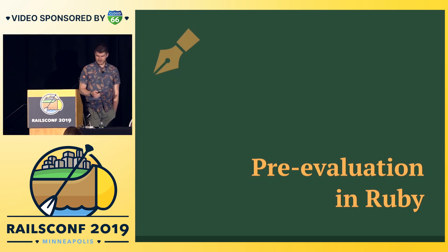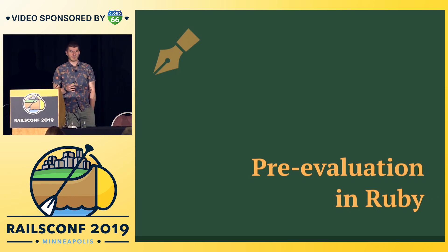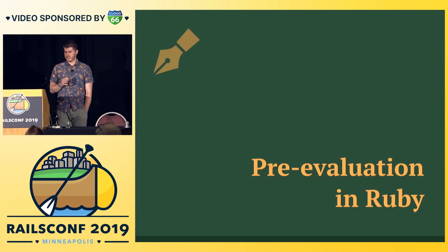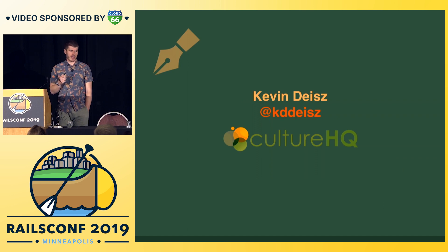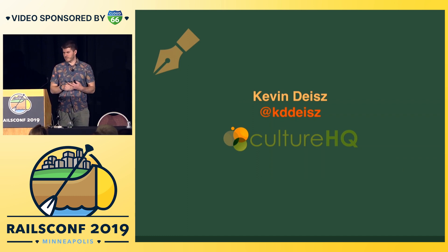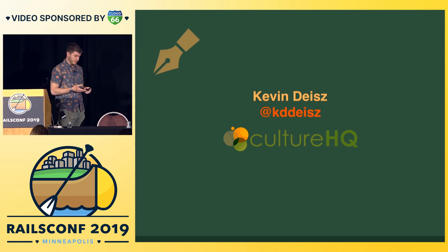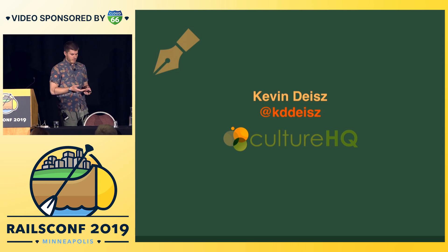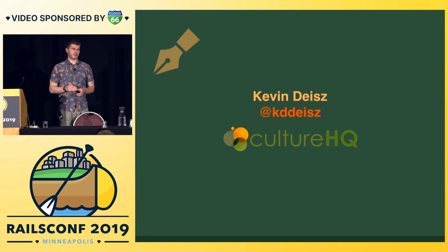Okay, I think we're gonna get started. Hi, thank you for coming to my talk. This is pre-evaluation in Ruby. My name is Kevin Deice, I'm at Katie Deice on the internet. You can follow me on Twitter — I give terrible hot takes on new Ruby stuff. I work at a company called Culture HQ, a small three-person company in Boston focused on improving culture in the workplace.